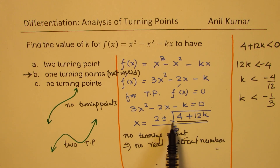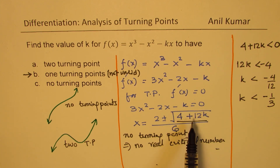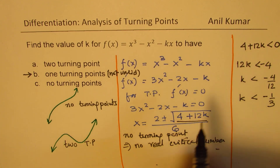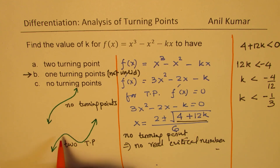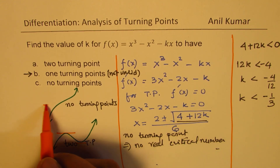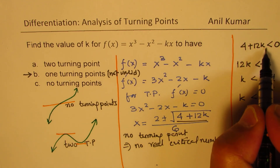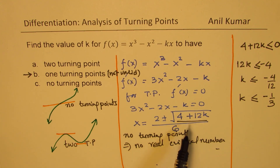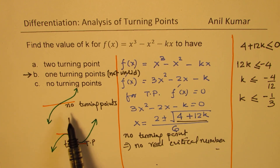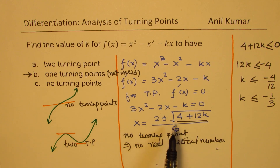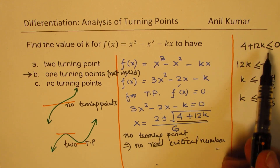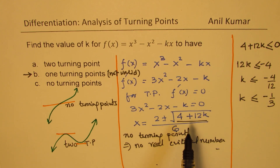Now let us see what happens when the discriminant is 0. When b² - 4ac = 0, that means we have only one value of x for which the derivative is 0 — that is, one critical value, which indicates a point of inflection. So we need to include that condition as well, meaning the inequality should be less than or equal to. Only one critical number indicates for sure a point of inflection.